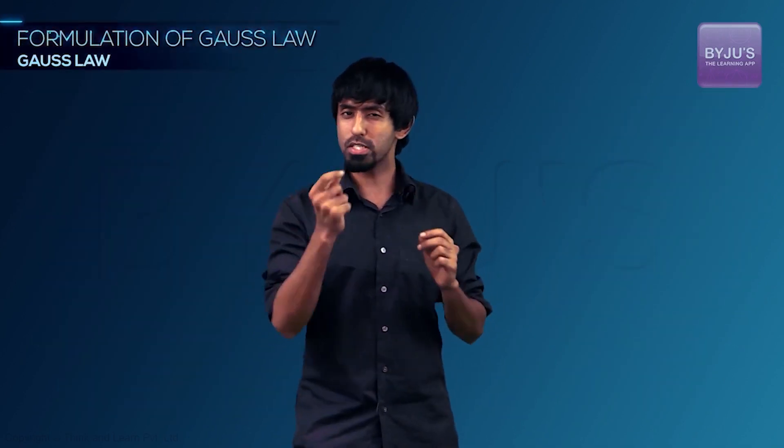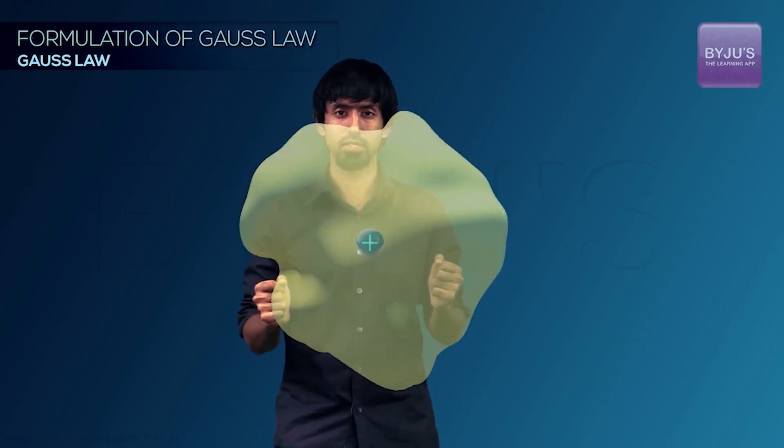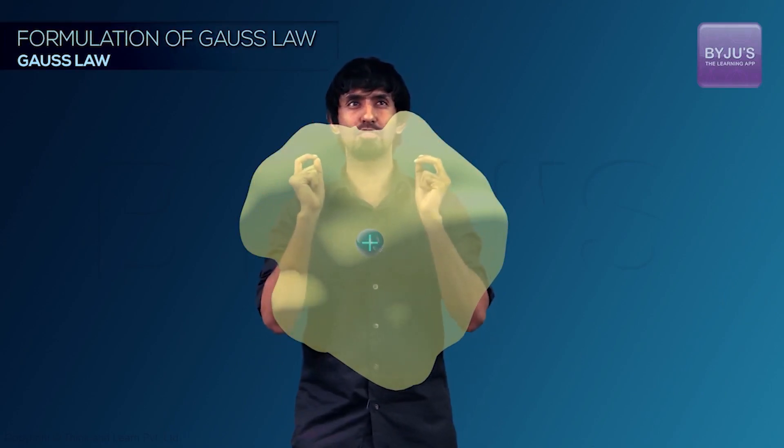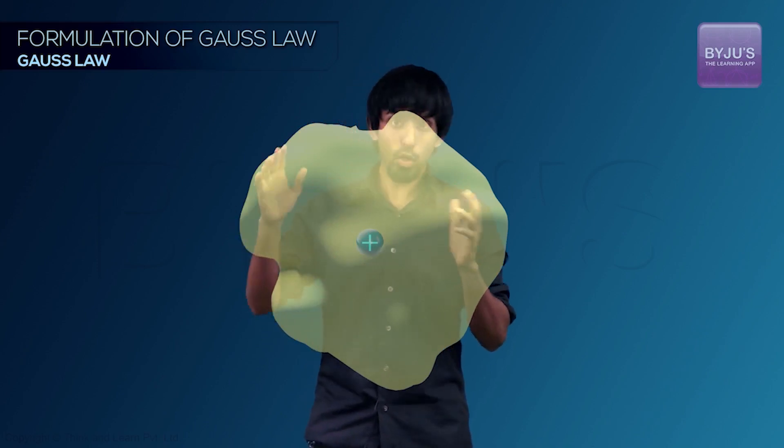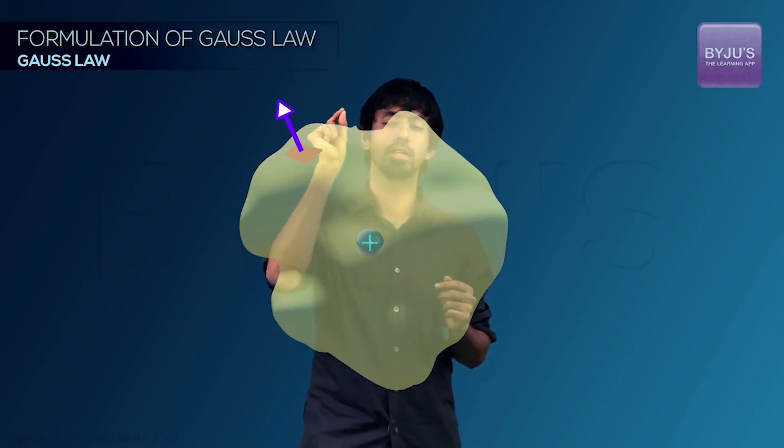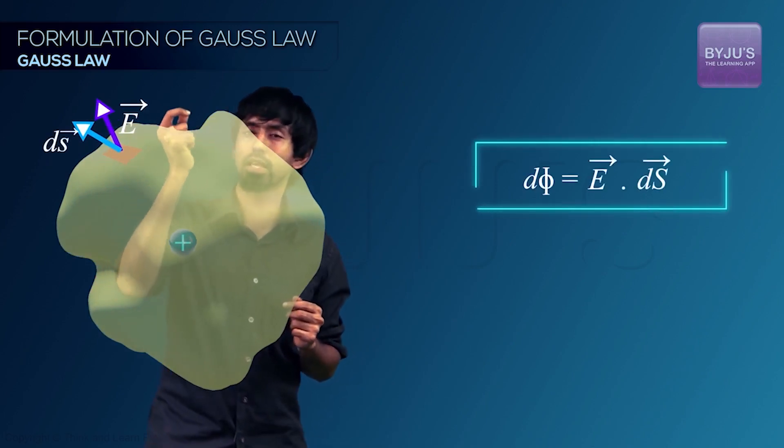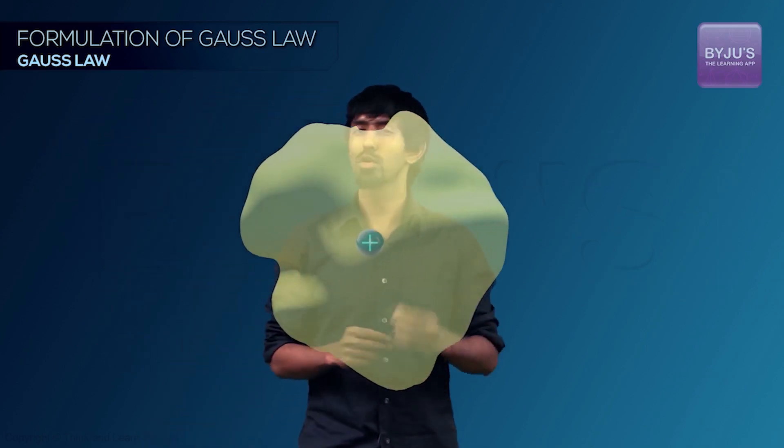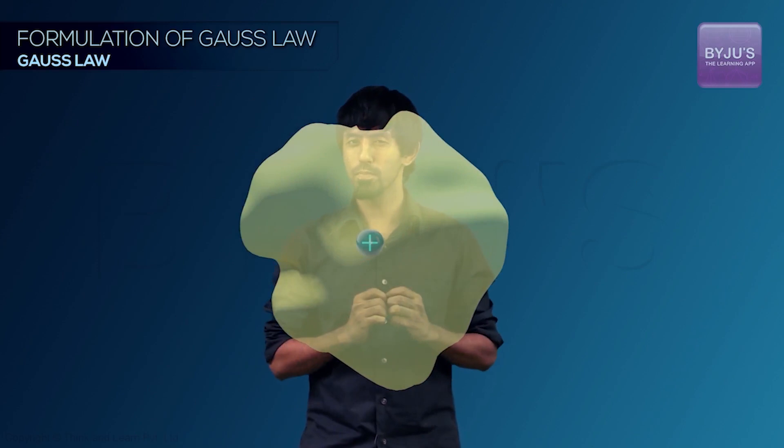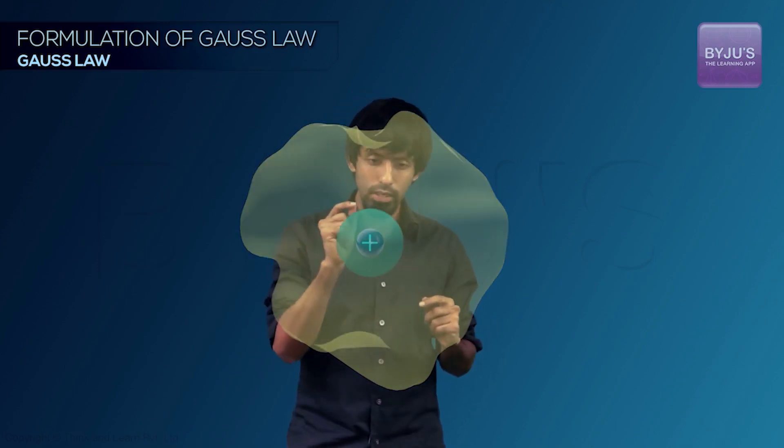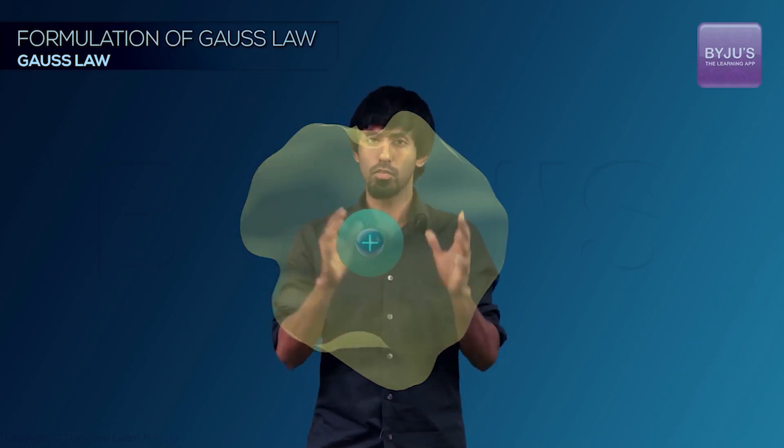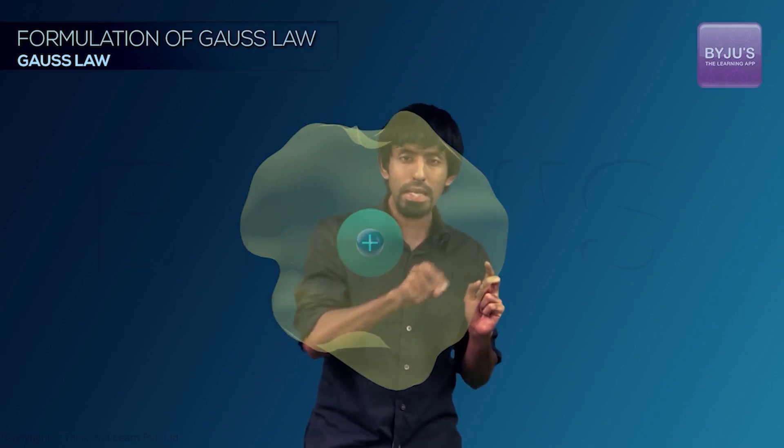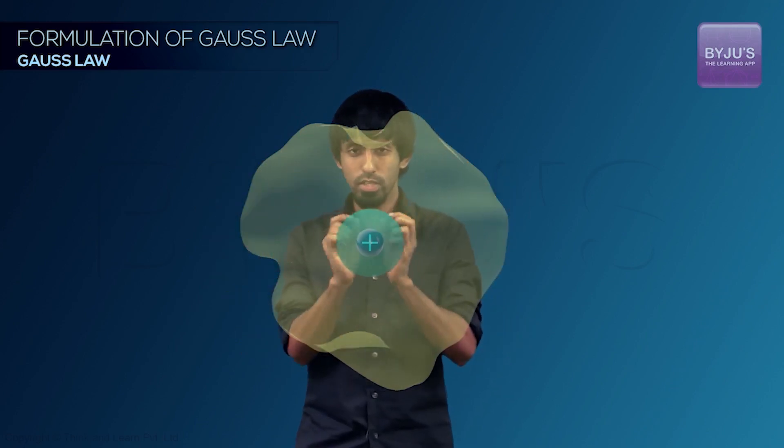So let's go one step further and consider a random body like this with a charge somewhere over there. Now I want to calculate the net flux through this surface. Now I could calculate the electric field at every single point, calculate the dot product of that and the area vector at that point and then do it all over the surface. I could do that or I could do something clever. What can we do over here? We can consider a sphere centered at that charge of a smaller radius, so it's completely inside this larger surface.